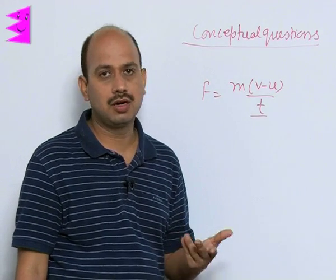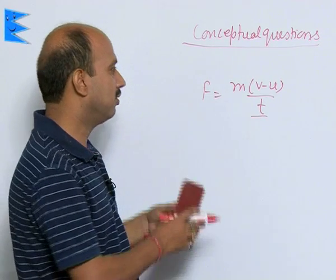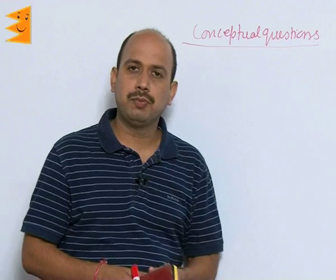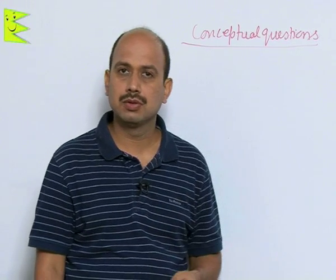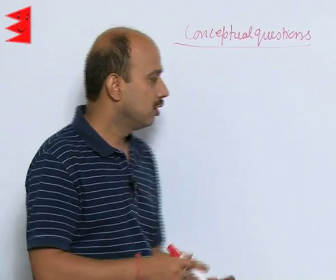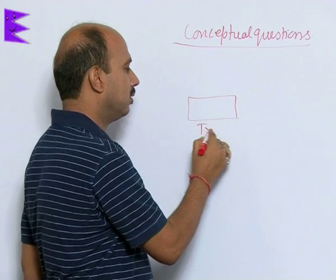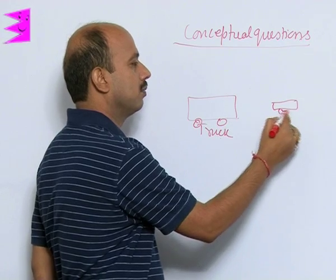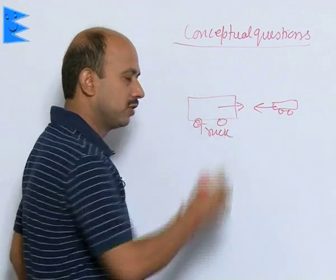Another example, very simple. Suppose there is a car and a bus, both are coming from the opposite side. Suppose from this side you have taken a truck and from this side you have taken a car. These are coming from opposite sides.